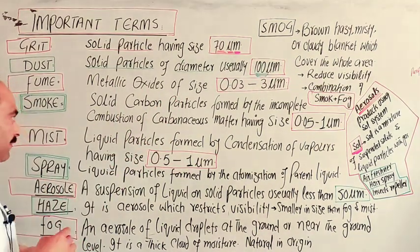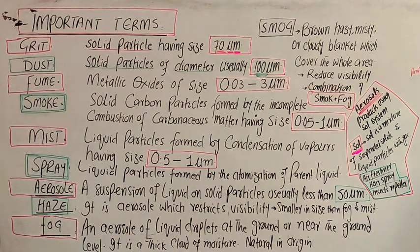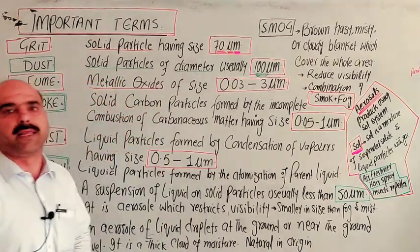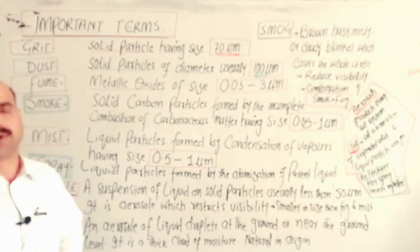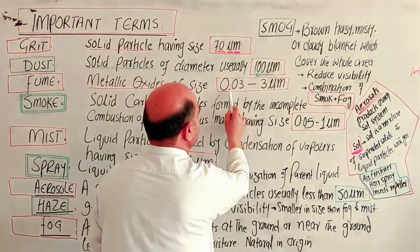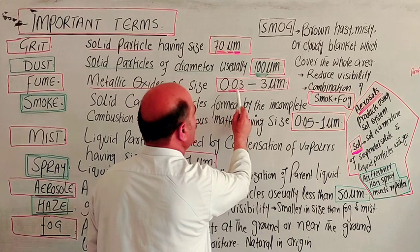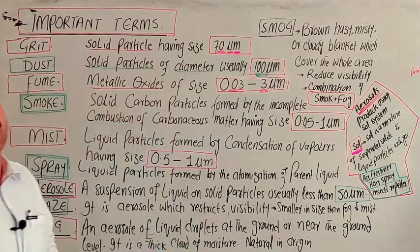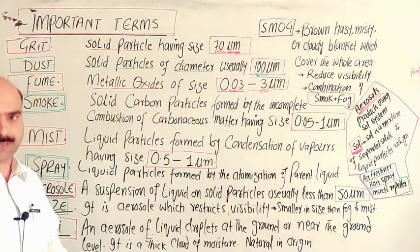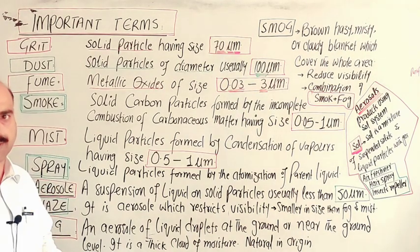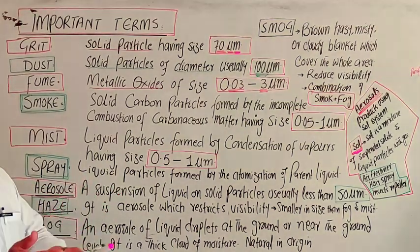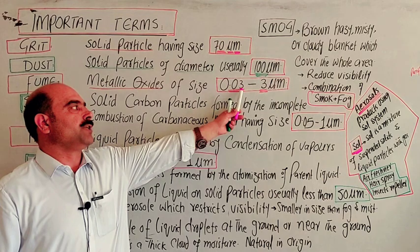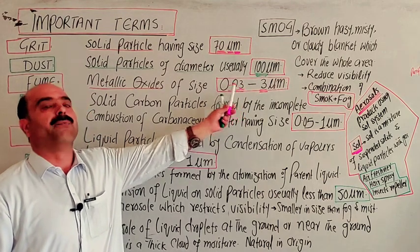Fume. Fume is metallic oxides. Metal plus oxygen is called metallic oxide, of size ranges from 0.03 micrometer to 3 micrometer. Metallic oxides include: calcium oxide, magnesium oxide, zinc oxide, copper oxide, iron oxide, lead oxide, silicon dioxide, etc. The size of 0.03 micrometer to 3 micrometer is fumes.